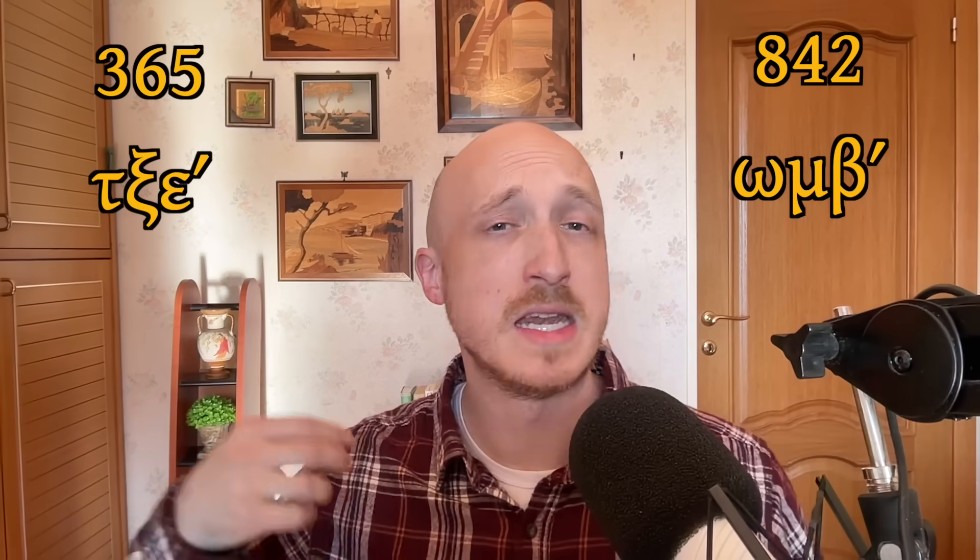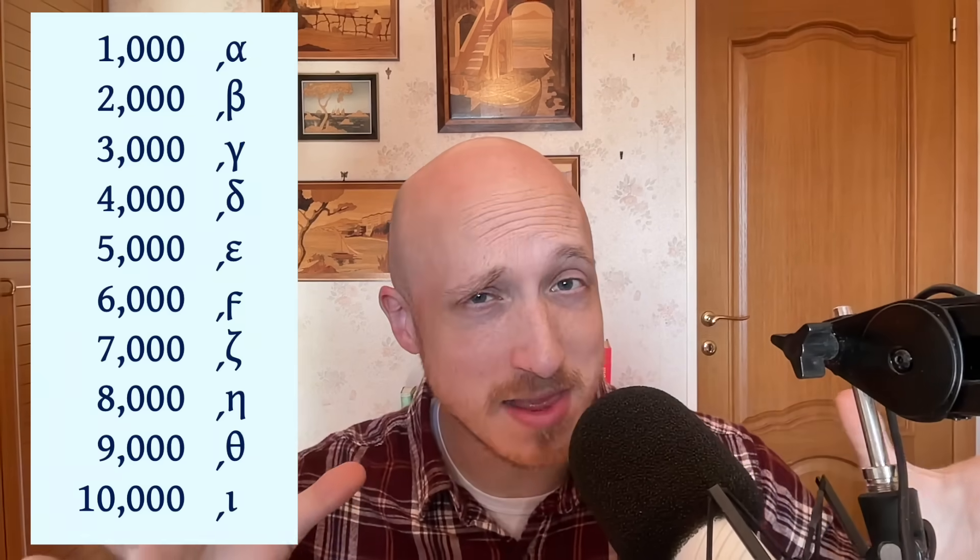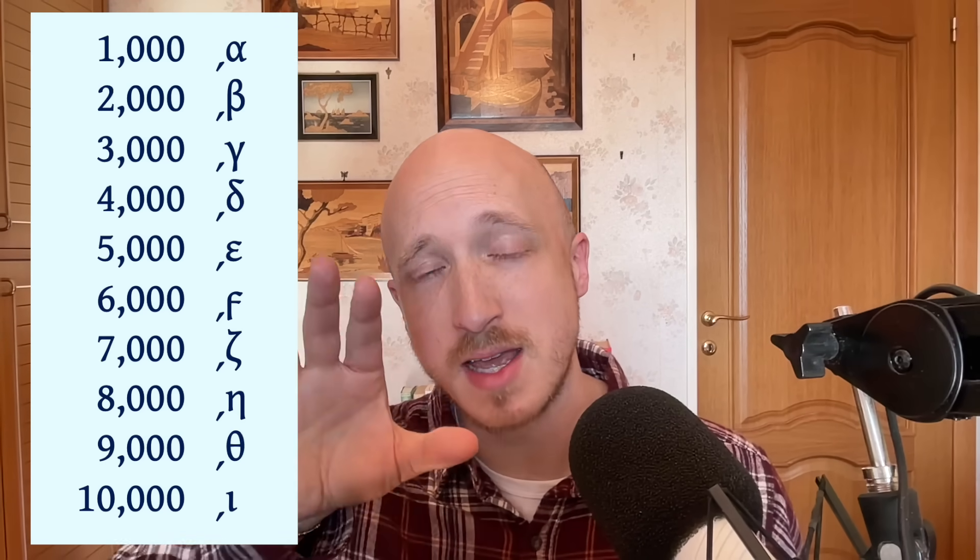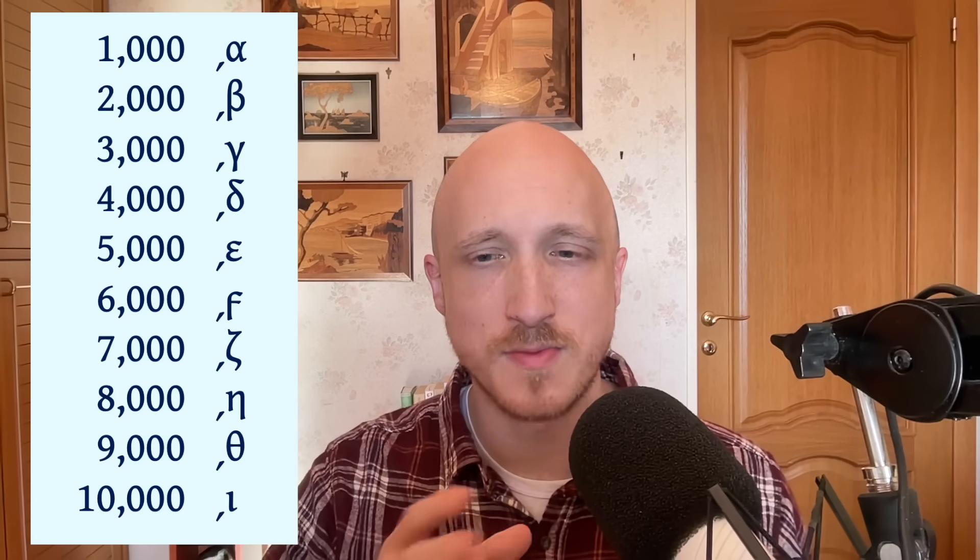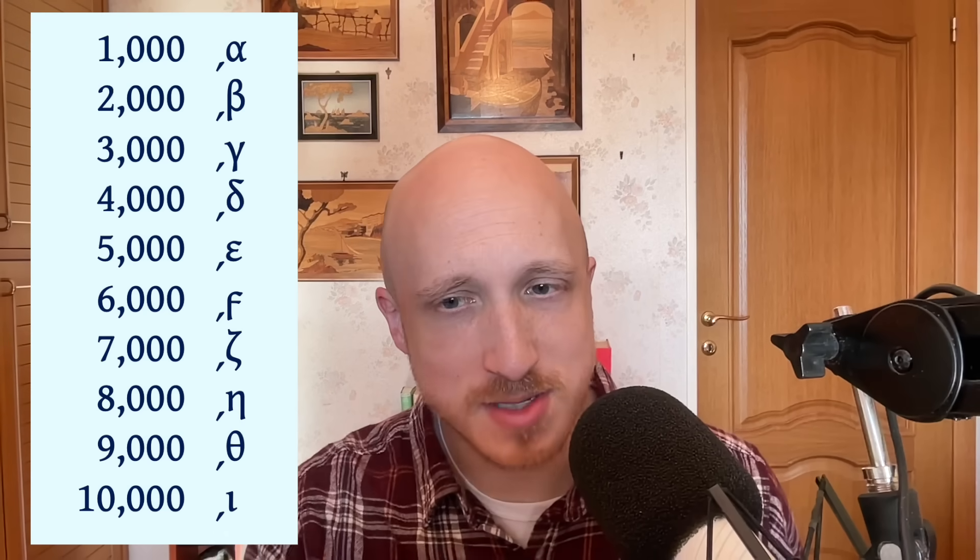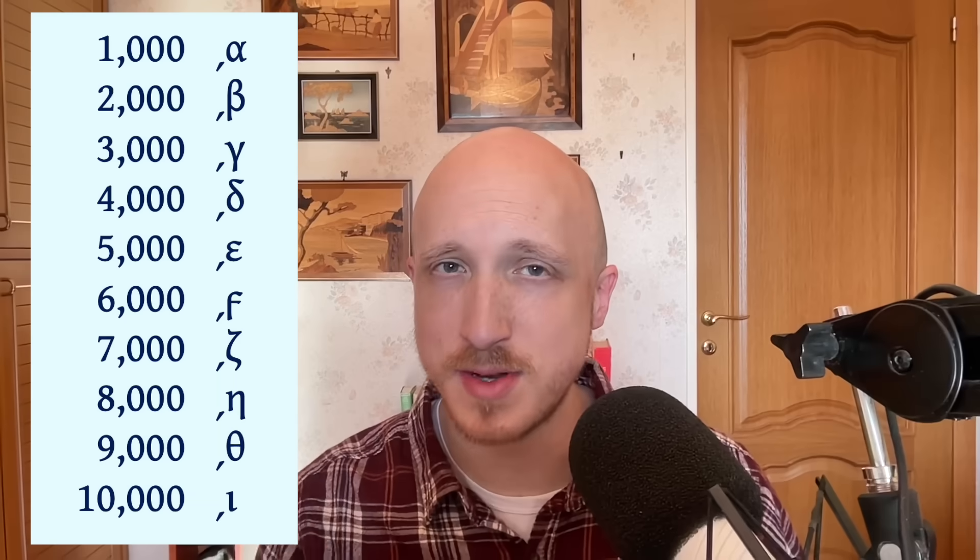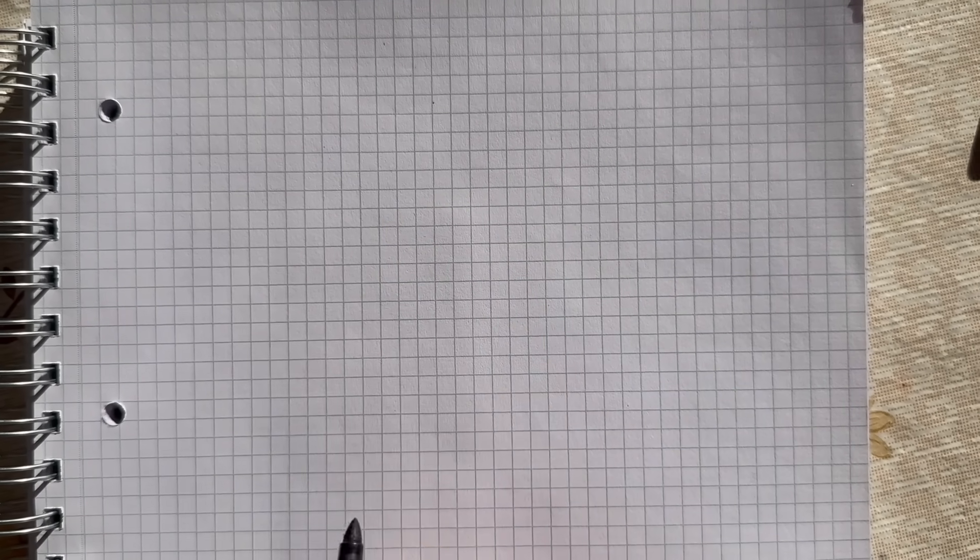That gives us so many numbers from 842 to 365, 999. For 1000, we just use the same letters again, but we put the keraia right at and below the line and in front of the letter: 1000, 2000, 3000, 4000, 5000, 6000, 7000, 8000, 9000, 10,000 is keraia plus the iota. Very simple, very clear, very easy to use.